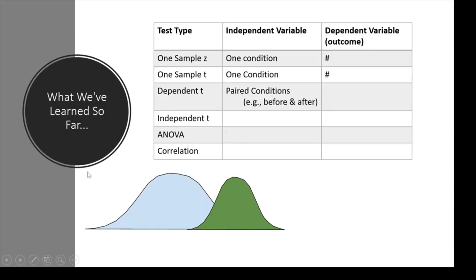Then we moved on to a dependent t, which was a paired-condition situation — maybe looking at before and after consuming my magic tea and measuring IQ scores. That picture still represents comparing different scores to the normal population. A dependent t is very much like a one-sample t, just applied to difference scores.